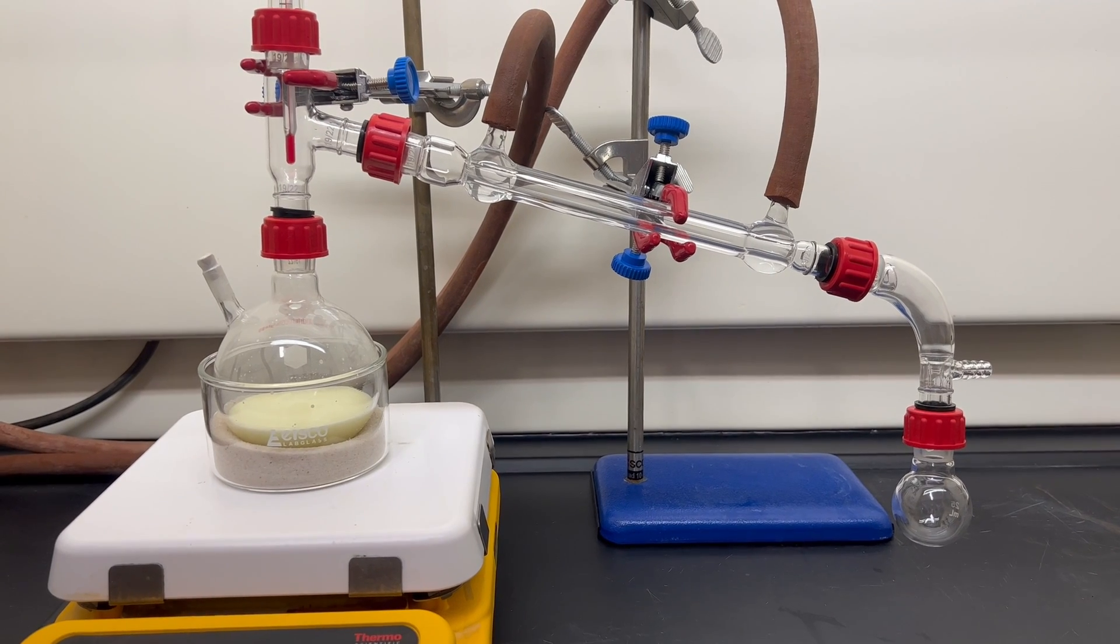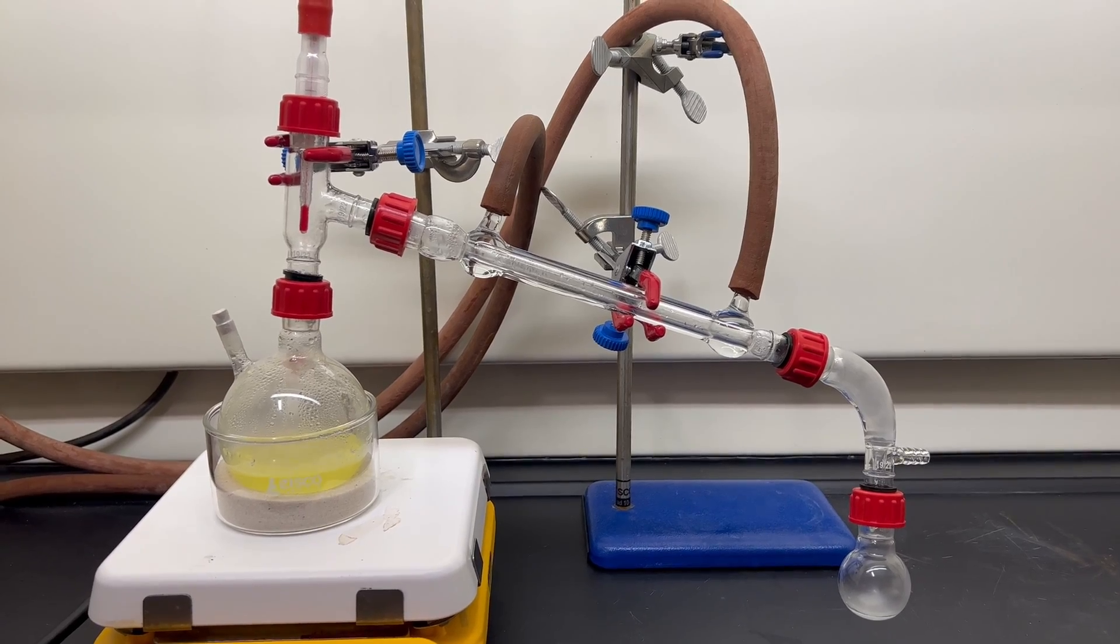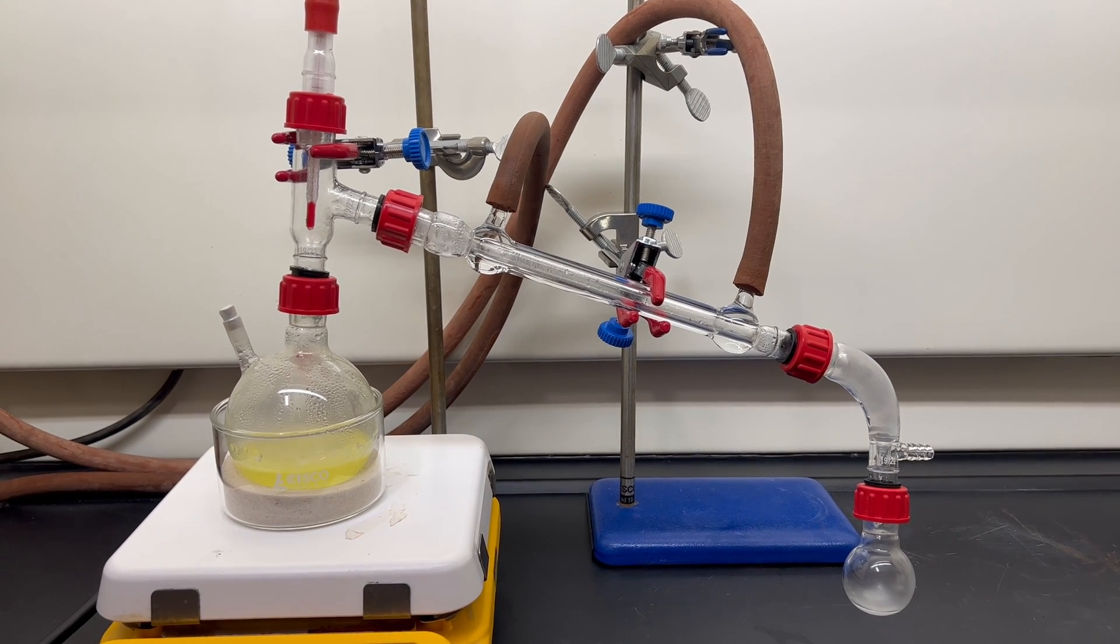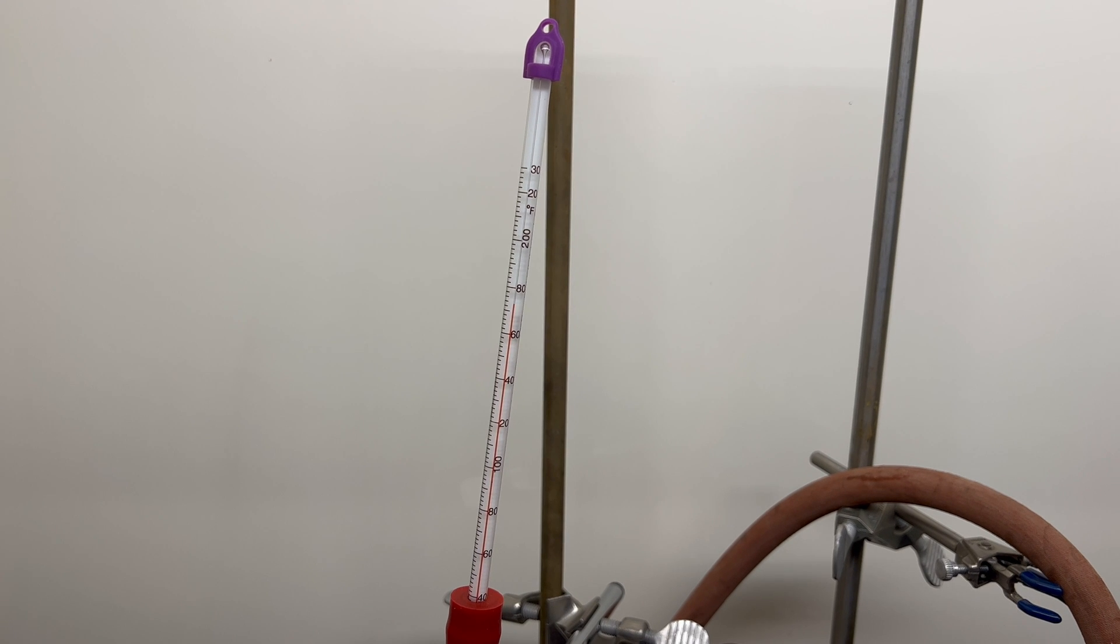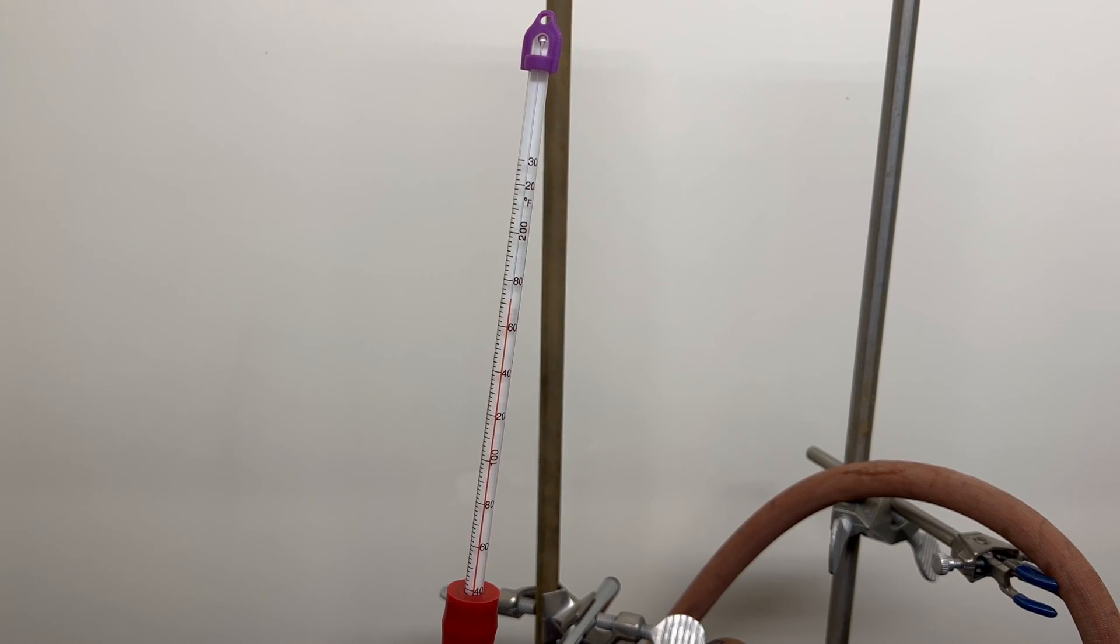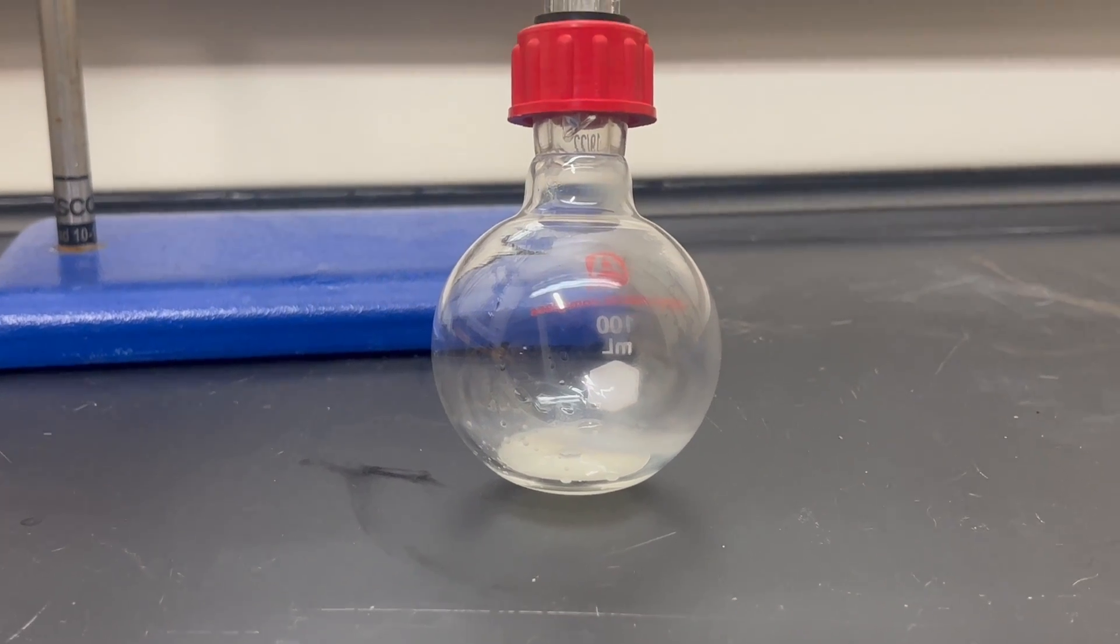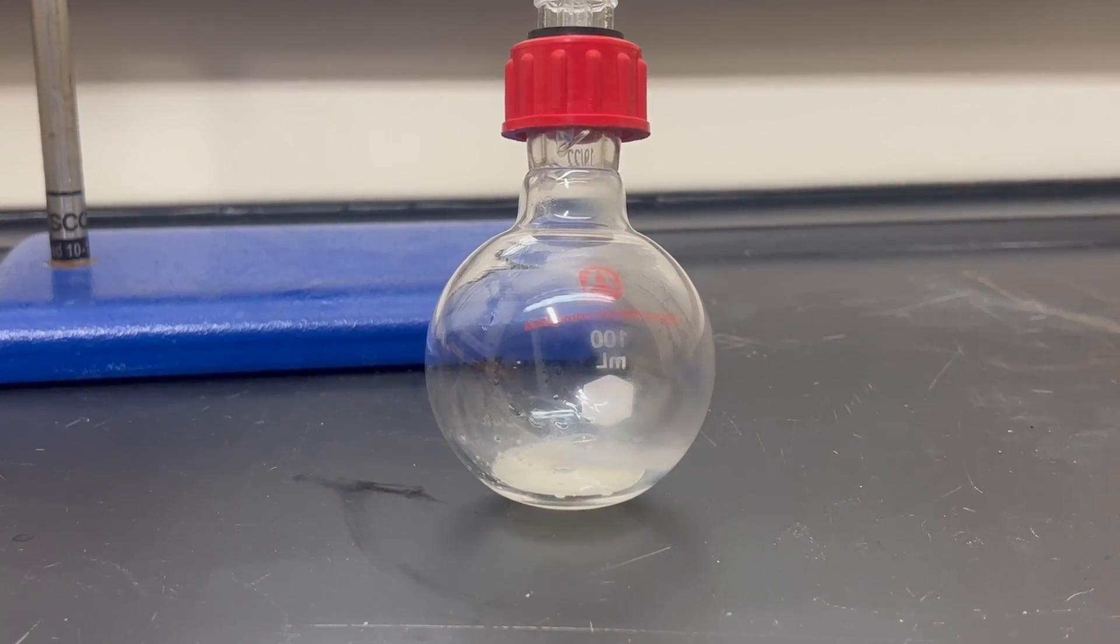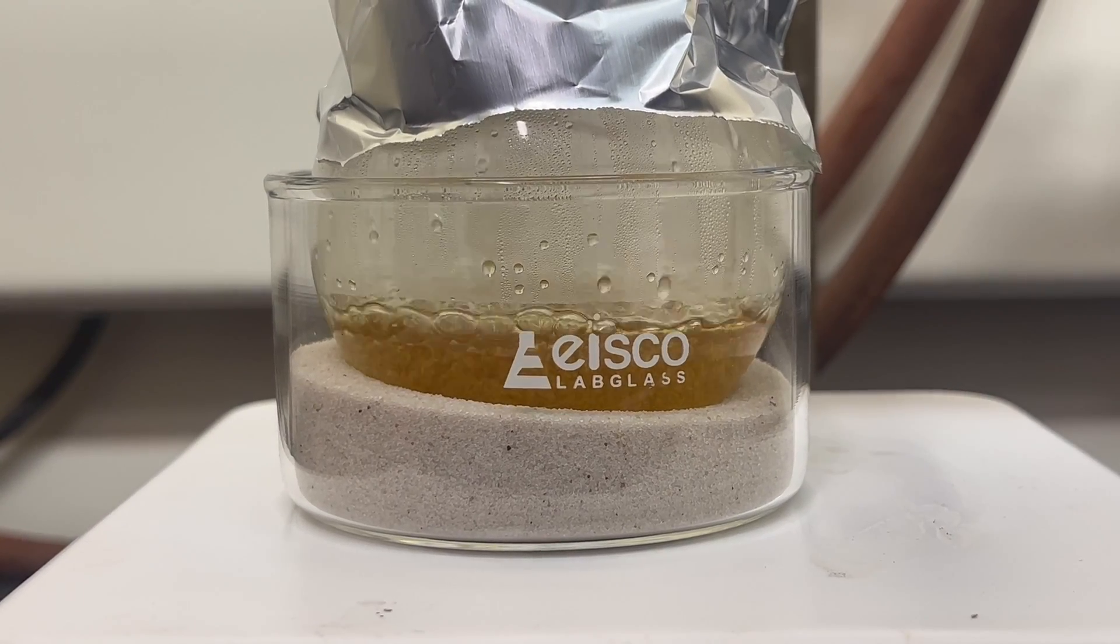Next, the cloudy nitrobenzene is distilled to remove any unreacted benzene and to remove any produced dinitrobenzene. Benzene boils at 80.1 degrees Celsius, so anything that comes over before the boiling point of 210.9 degrees Celsius, the temperature in which nitrobenzene boils, is discarded. The flask is then switched out when the proper distillation temperature is reached.